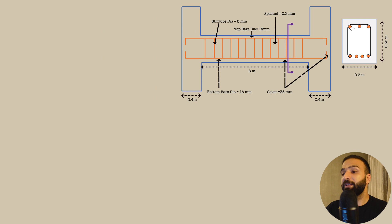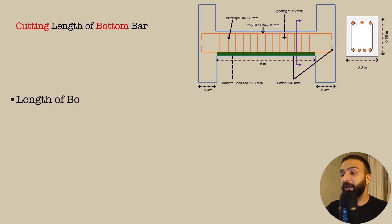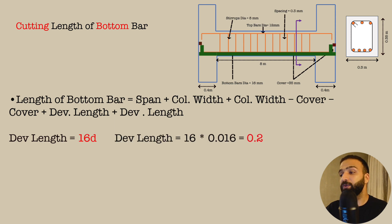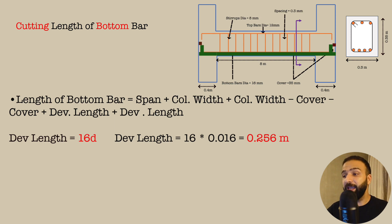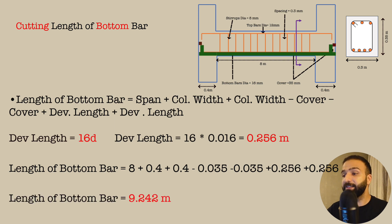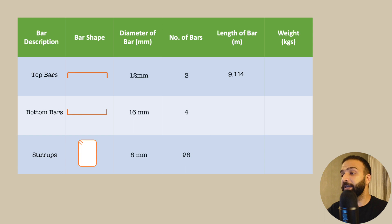Similarly, the length of the bottom bar is the span plus the width of the column on each side, minus the concrete cover on each side, plus the development length on each side. The development length is 16 × 0.016 = 0.256 meters. So the length is 8 + 0.4 + 0.4 − 0.035 − 0.035 + 0.256 + 0.256 = 9.242 meters.